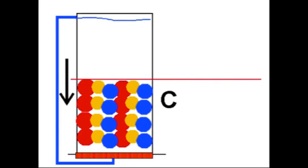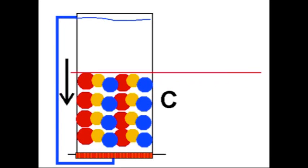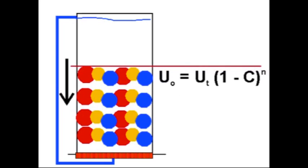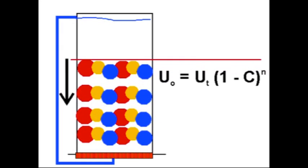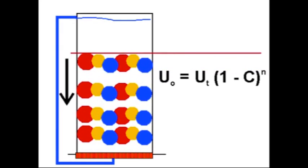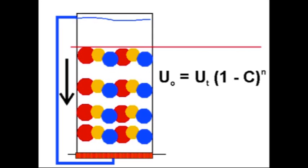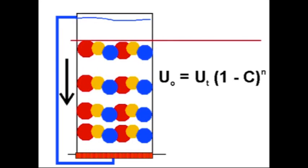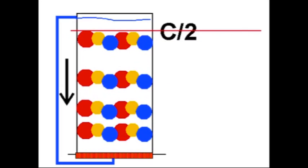This is a simple animation of fluidization, starting at a concentration C, and then following the height of the solids, which will end up at a height C divided by 2, so long as the final height of the fluidized bed is twice the original one.